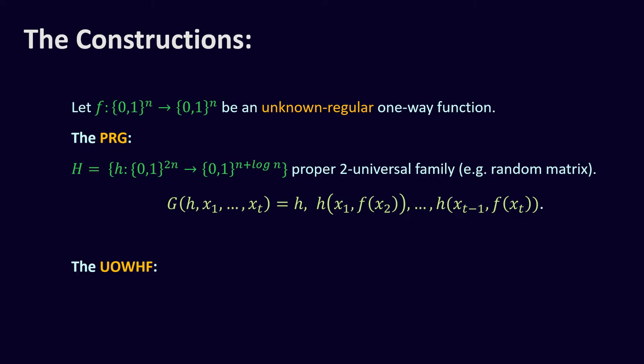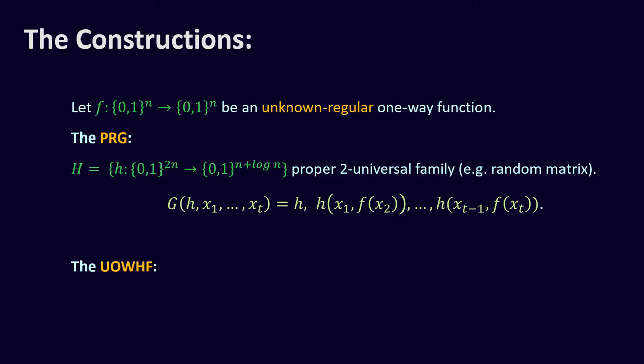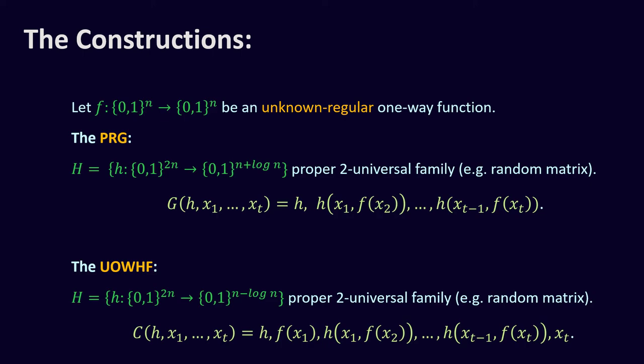For the universal one-way hash function construction, let h be a two-universal family from 2n bits to n minus log n bits. The construction is very similar to the PRG, except for two additions: f(x_1) at the beginning of the output, and the last input x_t at the end. Again, to get a shrinking function we need t larger than n over log n.